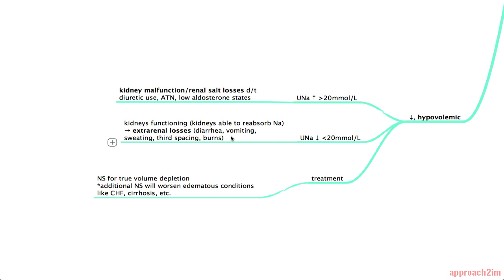This includes diarrhea, vomiting, sweating, third spacing and burns. And the other case is when your urine sodium is elevated. This means there's a malfunction in the kidney and you have renal salt losses. This is most often due to diuretic use, acute tubular necrosis and low aldosterone states.